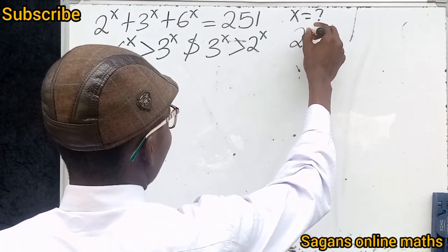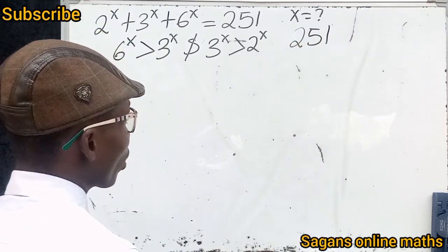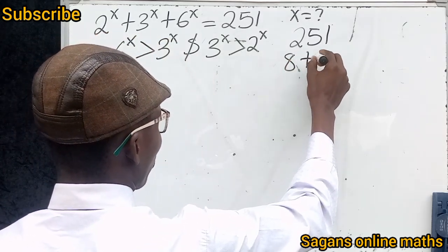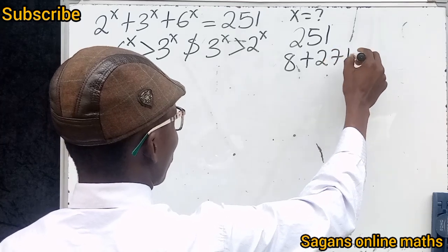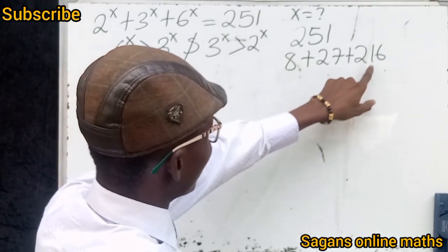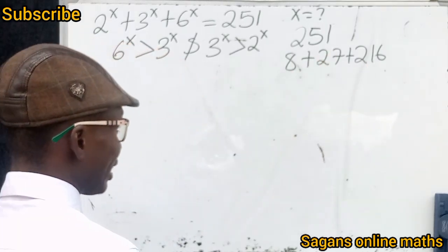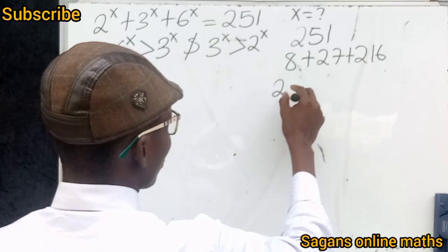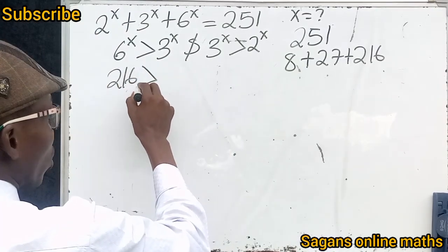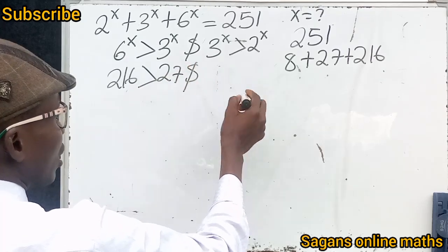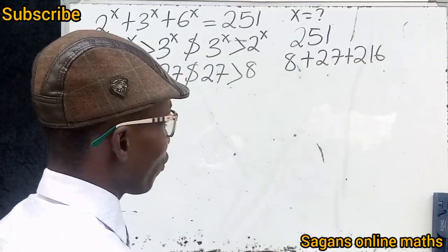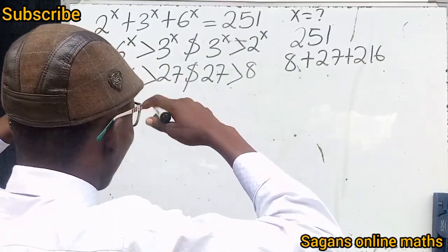We are having 251 on the right side. Notice that 8 plus 27 plus 216 equals 251. Also, 216 is greater than 27, and 27 is greater than 8. By looking at this, we can identify the value of x — can you see the similarities with our original problem?